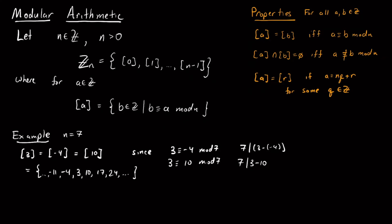We can also look at 6. The equivalence class of 6 is the same as the equivalence class of −1, the equivalence class of −8, and the equivalence class of 13. We can choose infinitely many representatives of either of these sets.